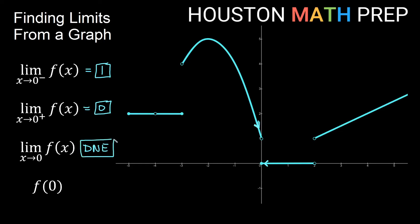What is the y value exactly at x equals 0? This open dot is a hole in the function, so it's not the correct y value. The filled-in, closed dot is the correct y value, and it's at y equals 0. So f of 0 equals 0.